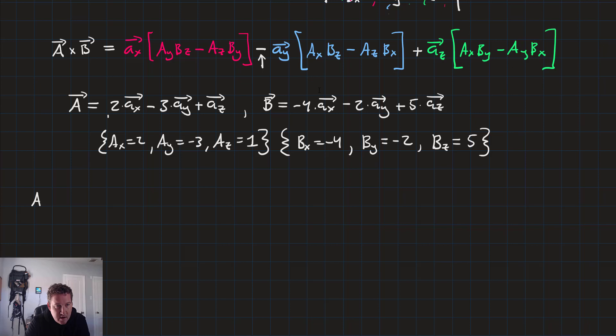And we'll have that the cross product a cross b is equal to a sub x times a sub y times b sub z. So that's minus 3 times 5 minus a sub z times b sub y. So minus 1 times minus 2.